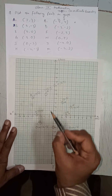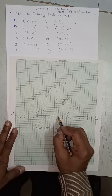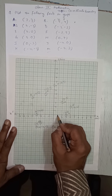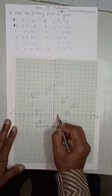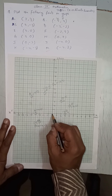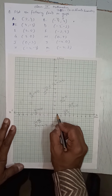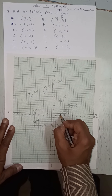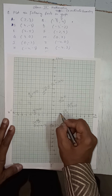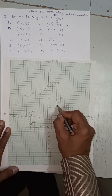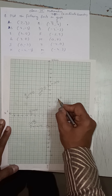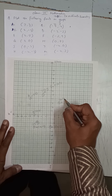First, look at point A: (2, 3). 2 is positive, so we move 1, 2 on the positive x side. Then 3 is positive, so we move upward 1, 2, 3. So this is the point (2, 3).